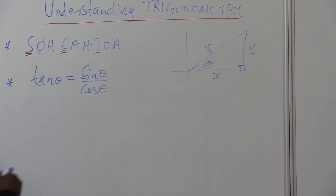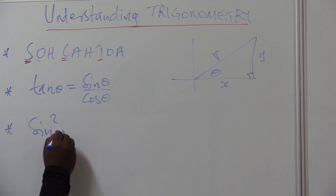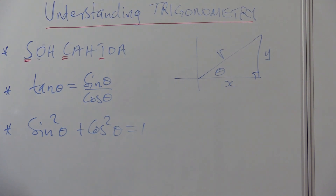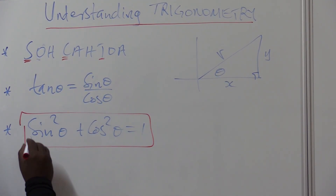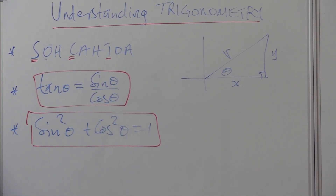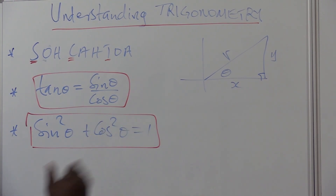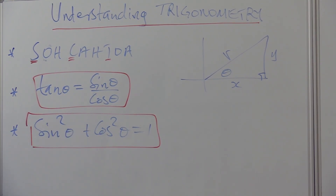The next important identity - these are the building blocks - is sine squared theta plus cos squared theta equals 1. This identity is very important. No matter how they rearrange it, they can make sine the subject: sine theta equals the square root of 1 minus cos squared theta. Or you make cos squared theta the subject: cos squared theta equals 1 minus sine squared theta.